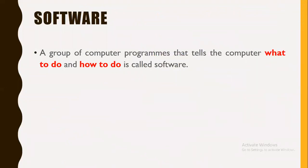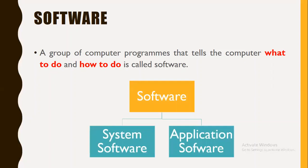What is software? A software is a group of programs that tells the computer what to do and how to do it. In short, a software is a set of instructions. There are basically two types of software: system software and application software.